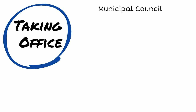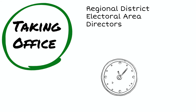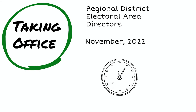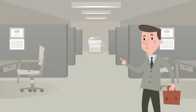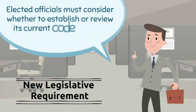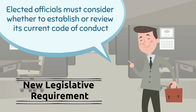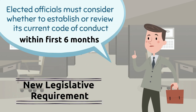Municipal Council members formally take office at the first regularly scheduled council meeting following the general elections, which must be in the first 10 days of November. The term of office for Regional District Electoral Area Directors begins at the first regularly scheduled board meeting in November. There is a new legislative requirement that elected officials must consider whether Council should establish or review its current code of conduct within the first six months of taking office.